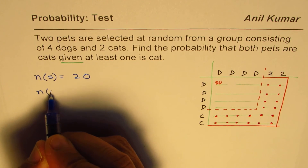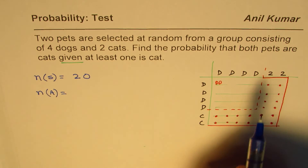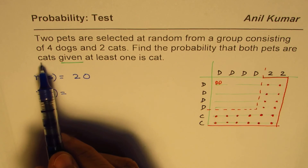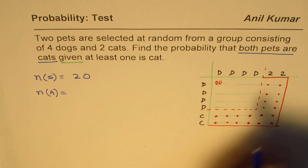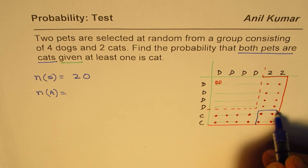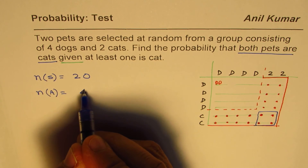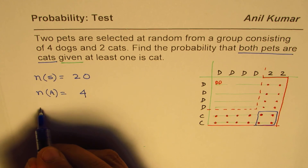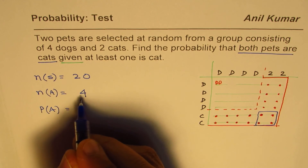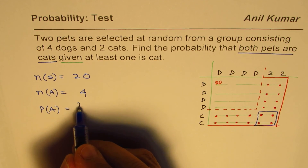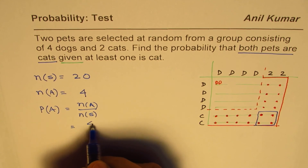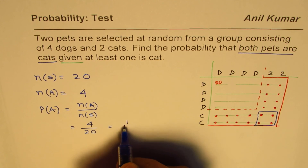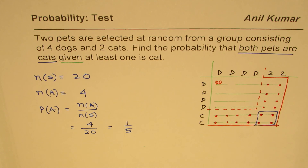Out of these elements in the modified domain, there are 20. And out of these, where we have both pets are cats — that is what we want — there are 4. Therefore, the conditional probability will be the ratio of 4 and 20, which is equal to 4 over 20, or 1 over 5. That is how we solve this question.